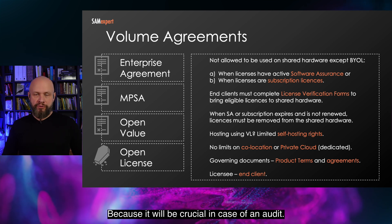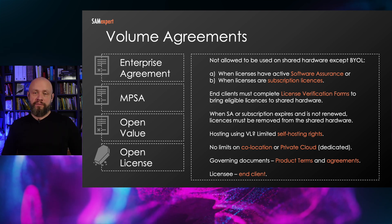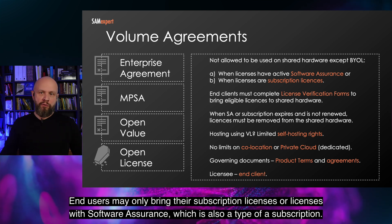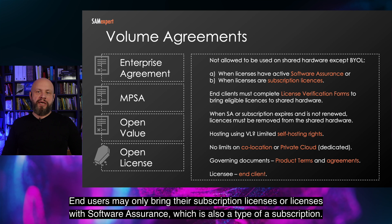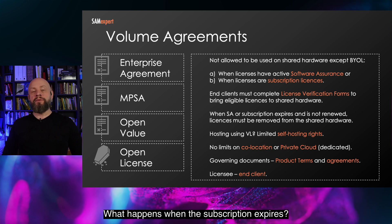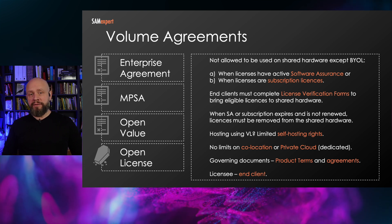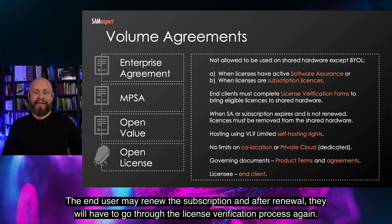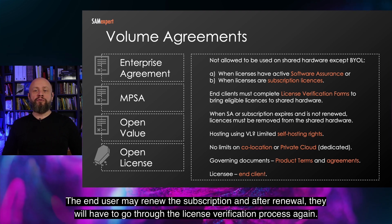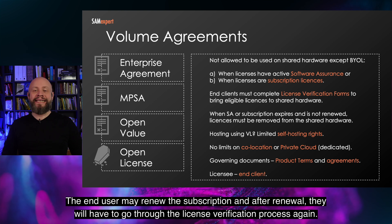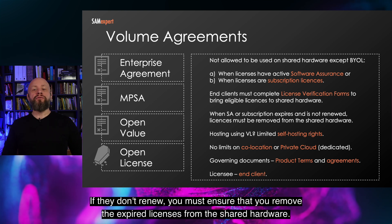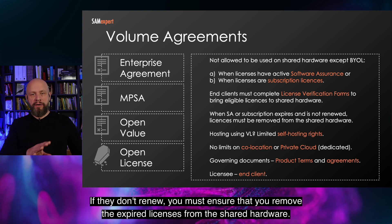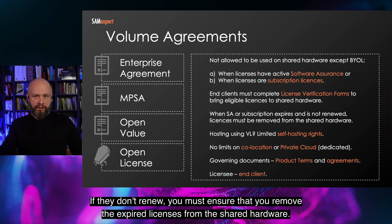Keeping those forms will be crucial in case of an audit. End users may only bring their subscription licenses or licenses with Software Assurance, which is also a type of subscription. When the subscription expires, the end user may renew it, and after renewal they will have to go through the license verification process again. If they don't renew, you must ensure that you remove the expired licenses from the shared hardware.